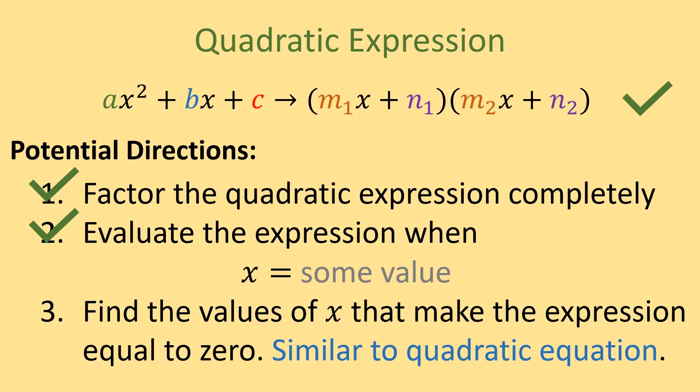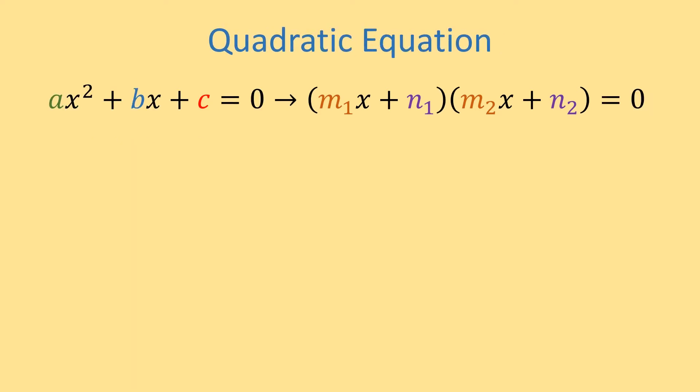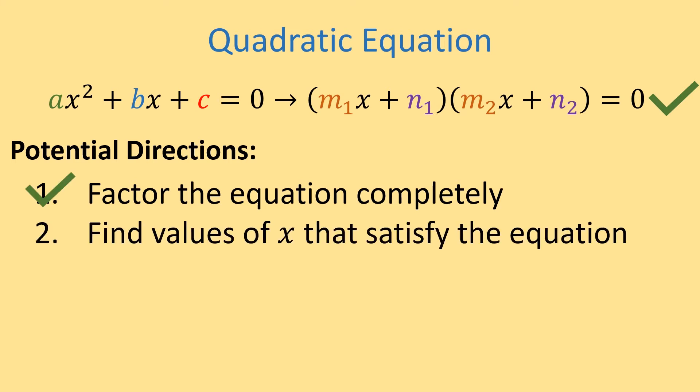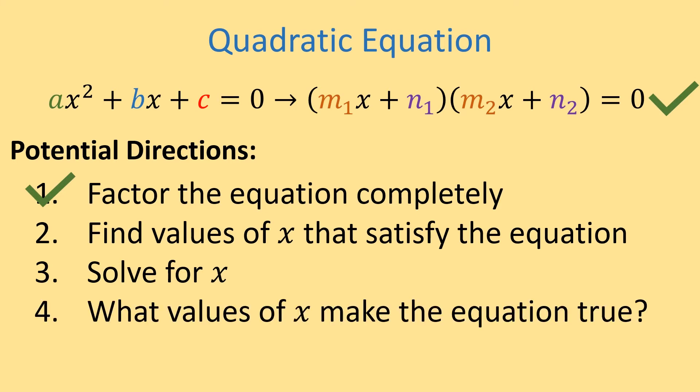Let's look at a quadratic equation. The only difference between a quadratic expression and equation is that our expression is now set equal to 0. For this video, we're going to assume we already have the factored form. So if our directions are to factor the equation completely, then we're already done. But if our directions are to find values of x that satisfy the equation, solve for x, or find what values of x make the equation true, we still have one more step to do.